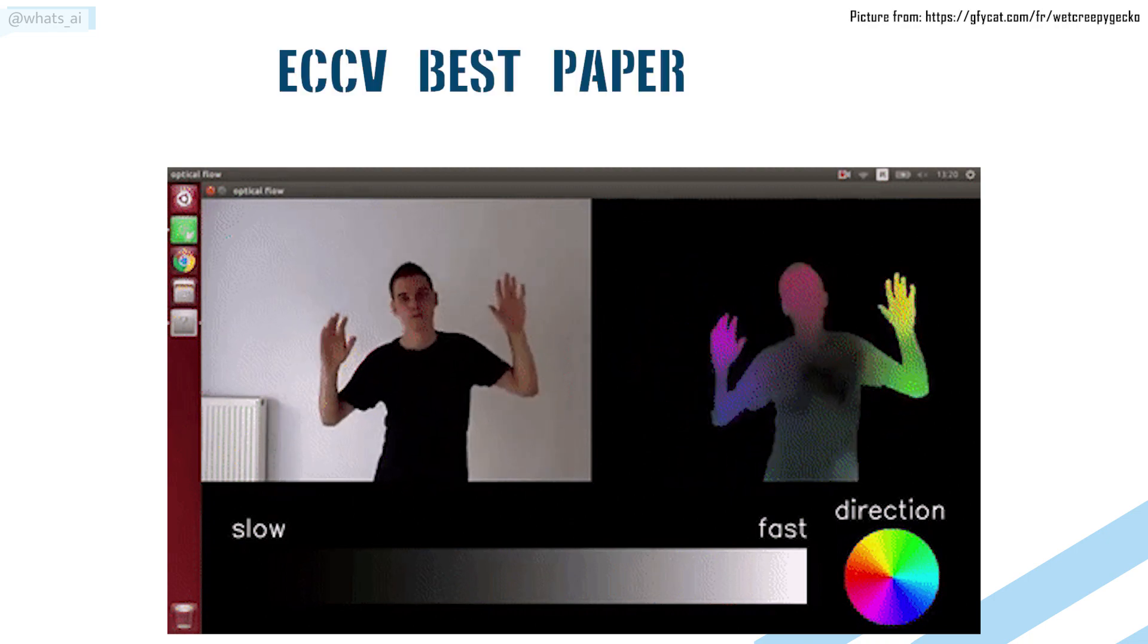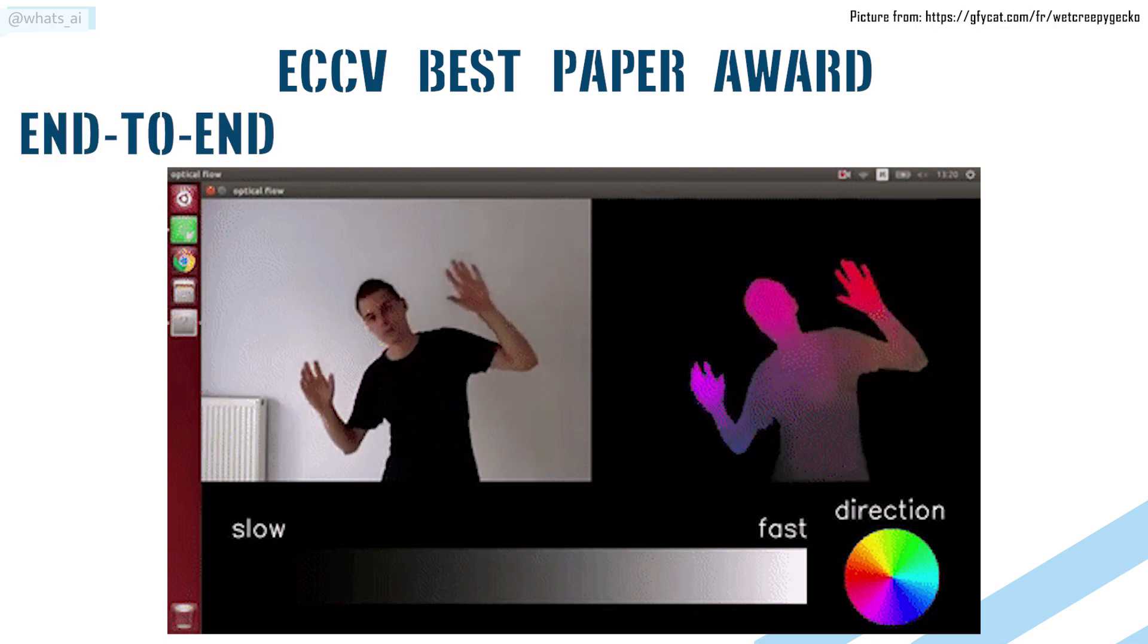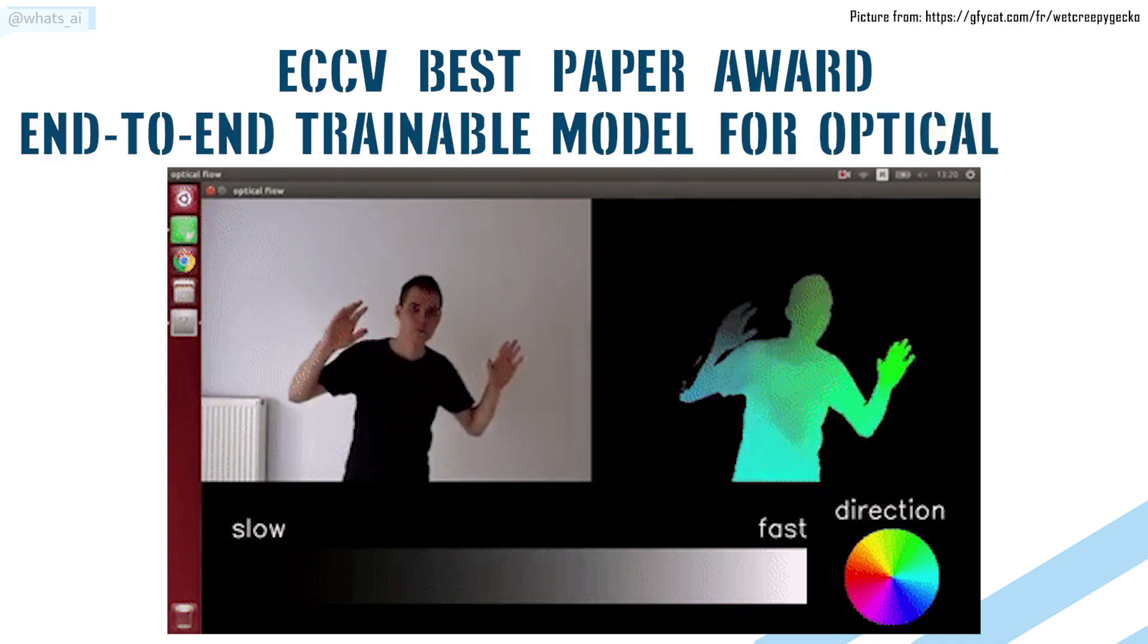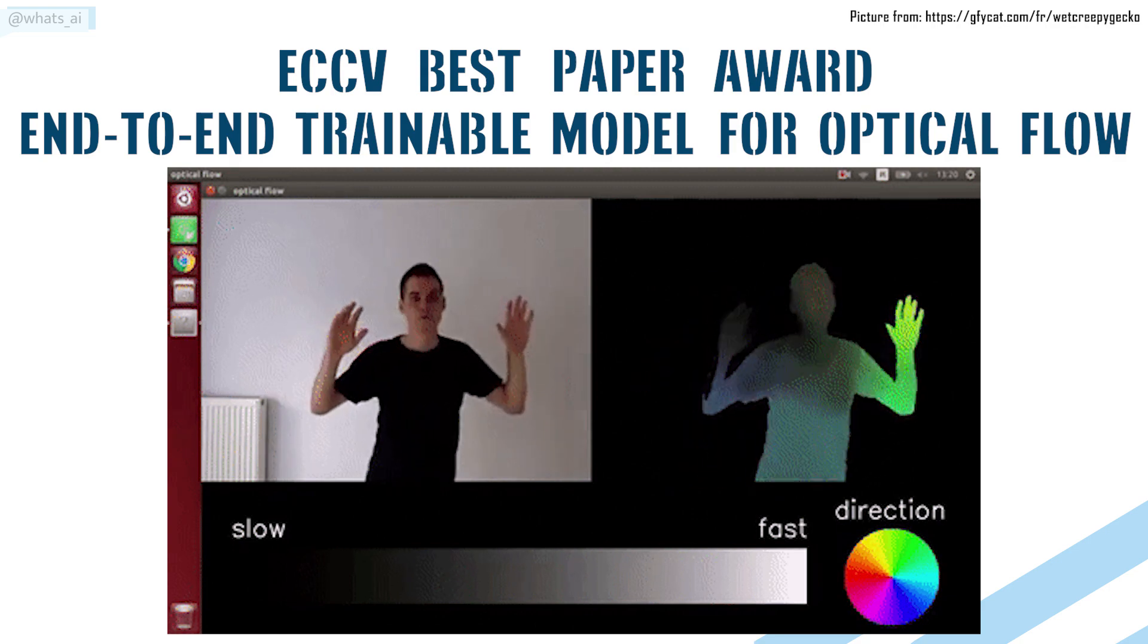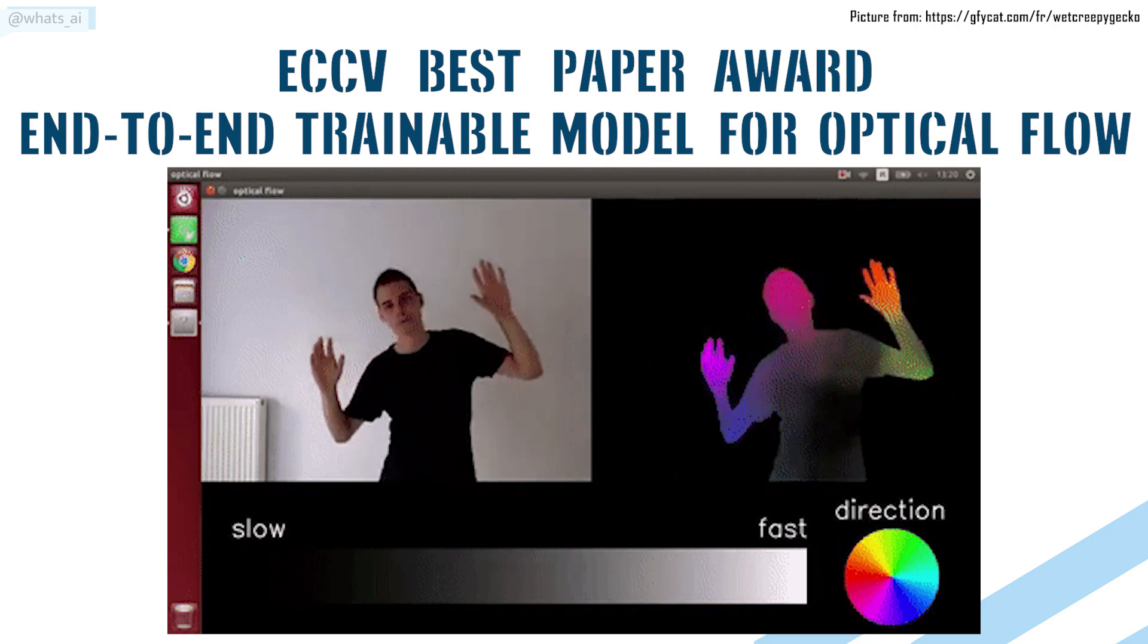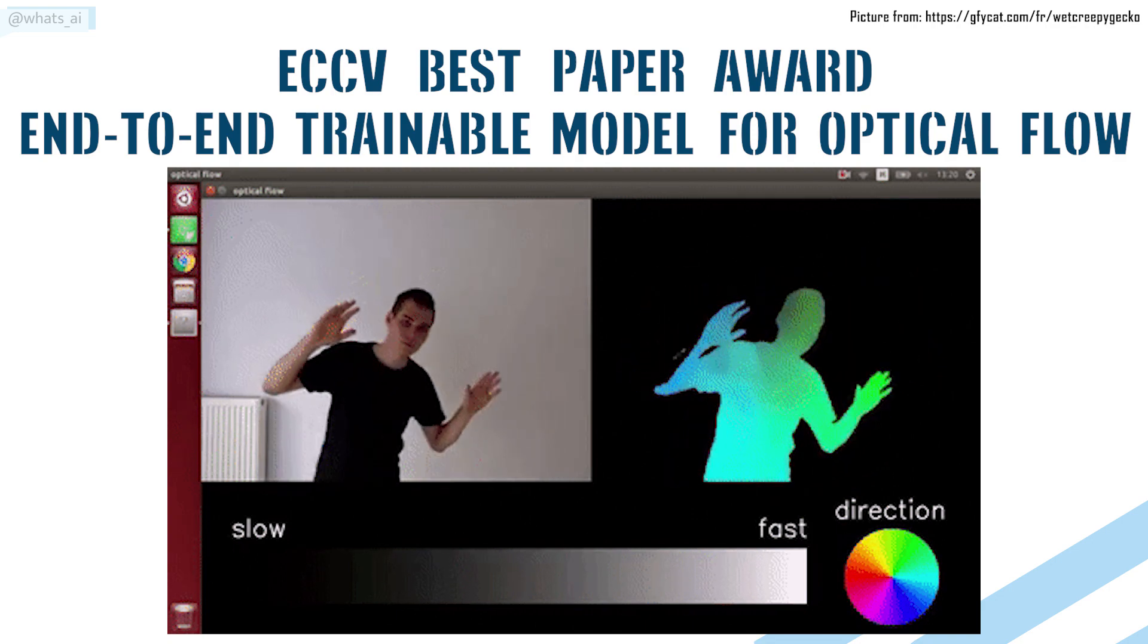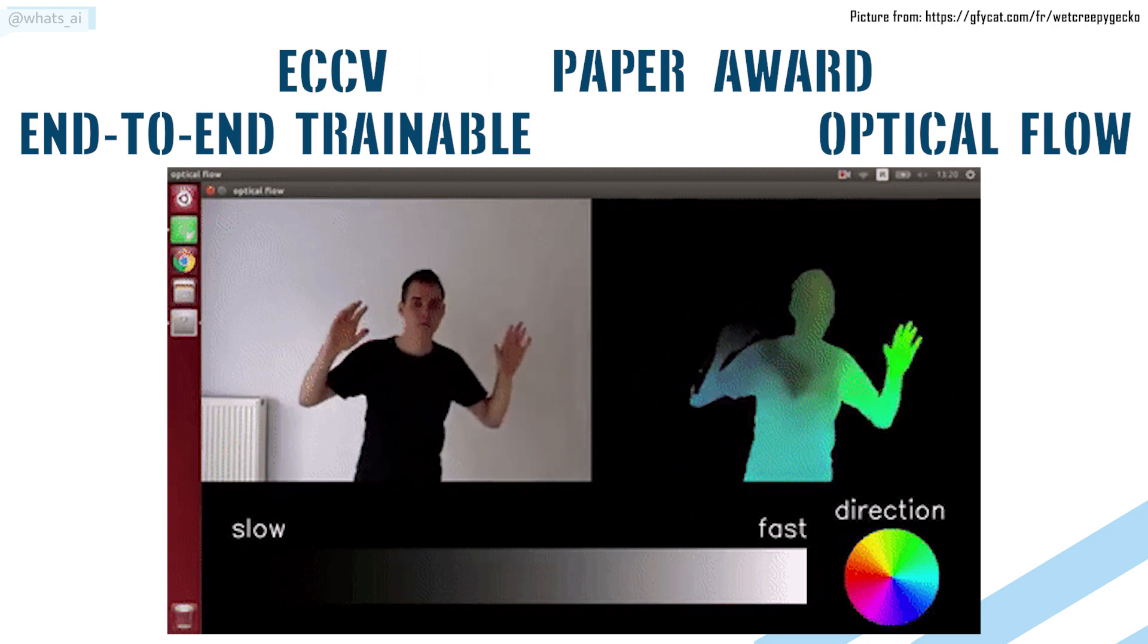The ECCV best paper award goes to Princeton team. They developed a new end-to-end trainable model for optical flow. Their method beats state-of-the-art architectures accuracy across multiple datasets and is way more efficient. They even made the code available for everyone on their GitHub. Let's see how they achieve that.